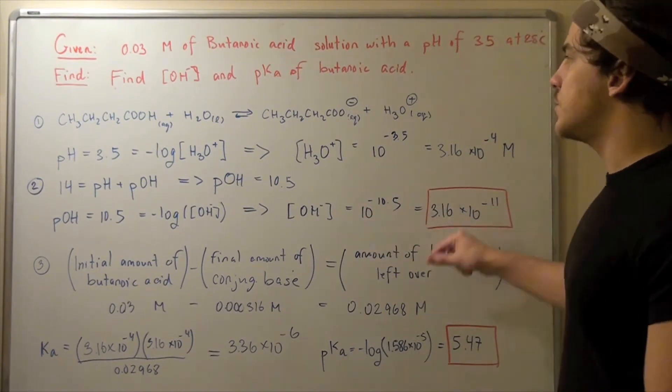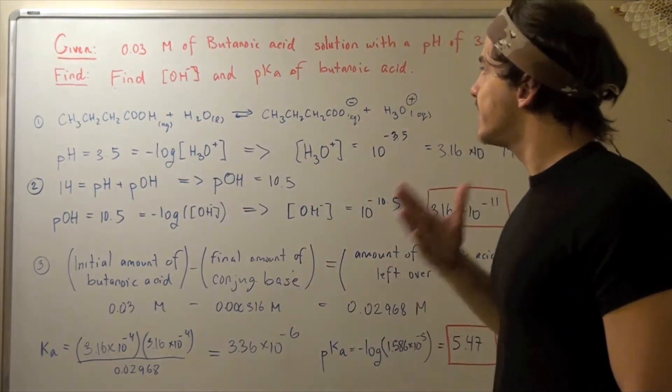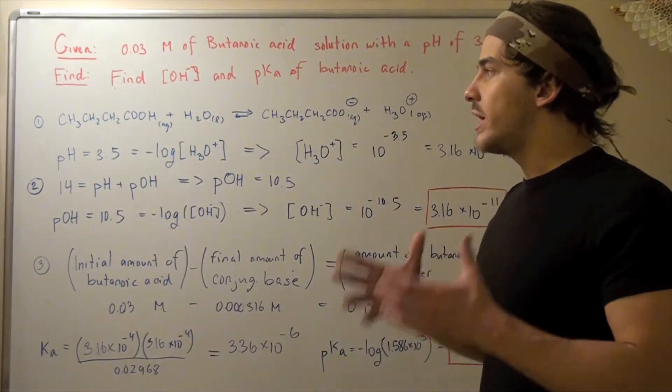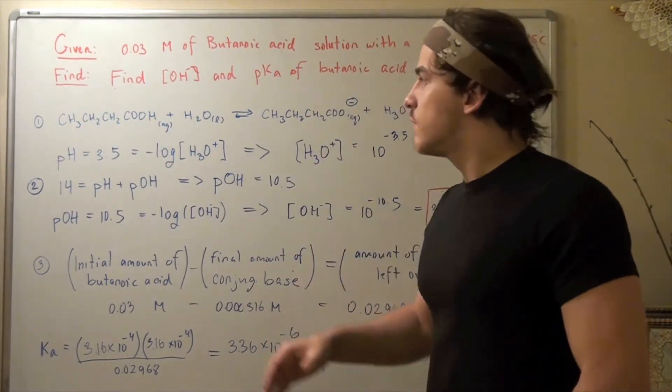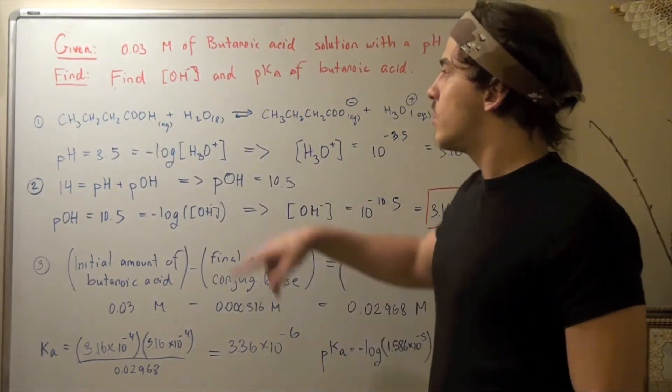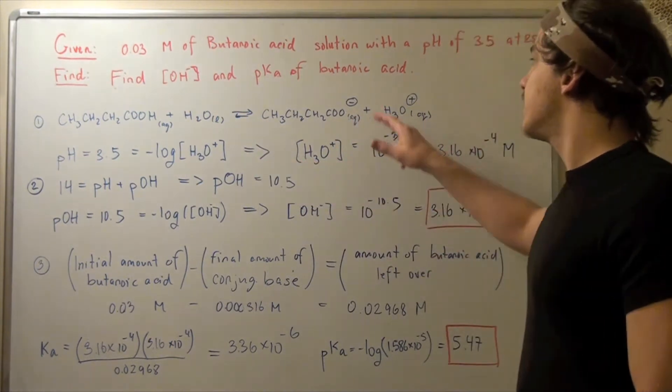So this is my concentration of hydroxide. I found the first part. Now let's look at the pKa. Before anything else, we must write the dissociation reaction for our acid. So our acid in the aqueous state reacts with water in the liquid state to form a conjugate base and a conjugate acid.